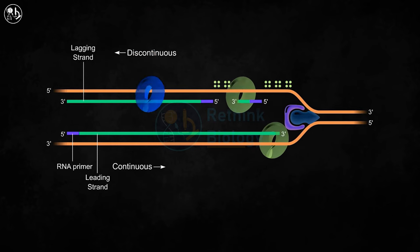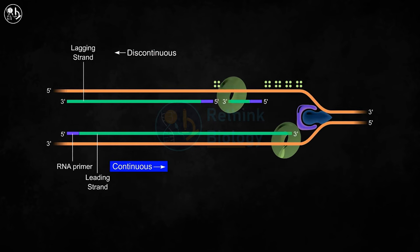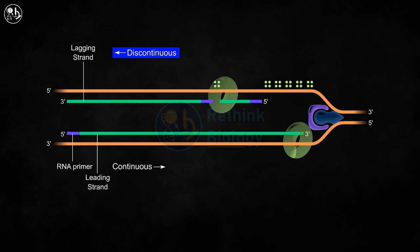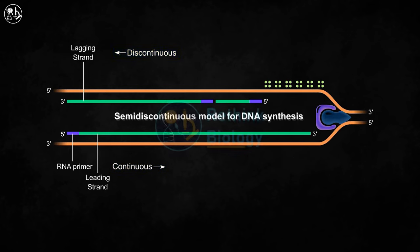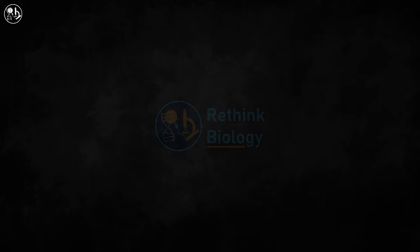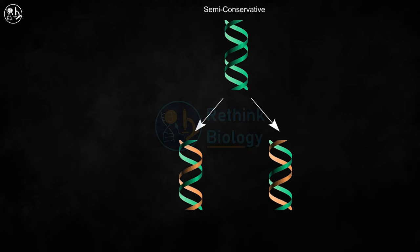As the synthesis of one DNA strand is continuous and another is discontinuous, this model is called the semi-discontinuous model of DNA synthesis. In the semi-conservative model of DNA replication, each of the two DNA strands acts as a template for new DNA synthesis.